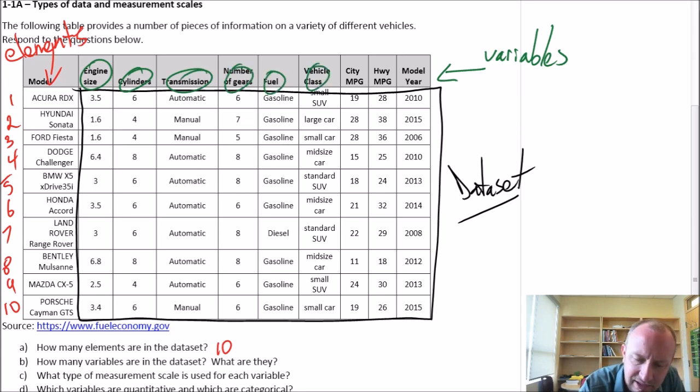number of gears, fuel, vehicle class, city and highway miles per gallon, and model year. So each of those represents one of the variables.